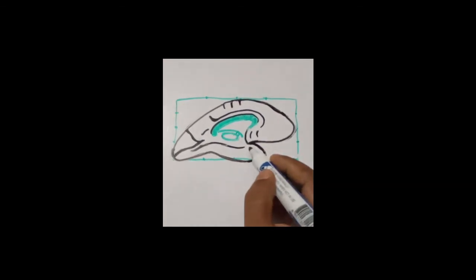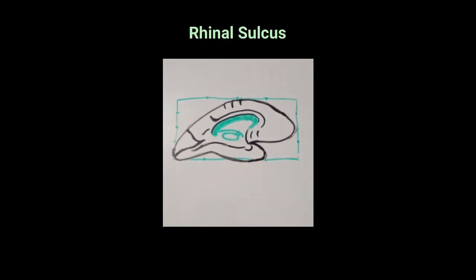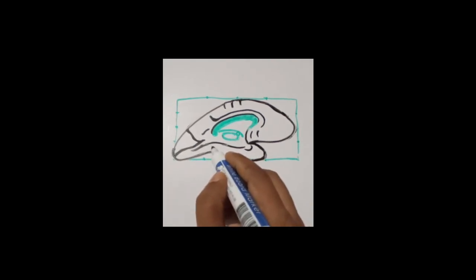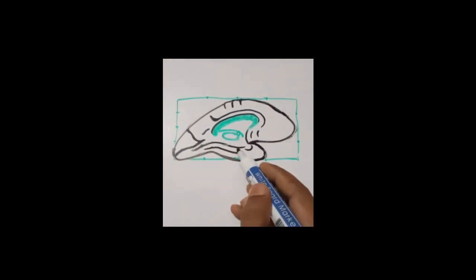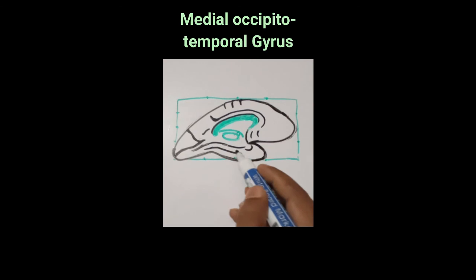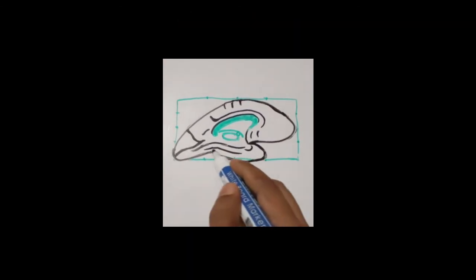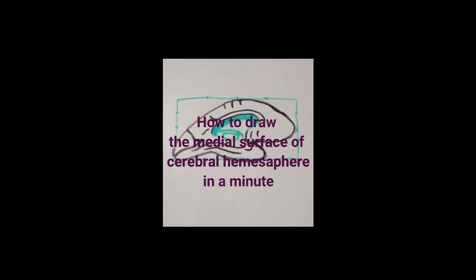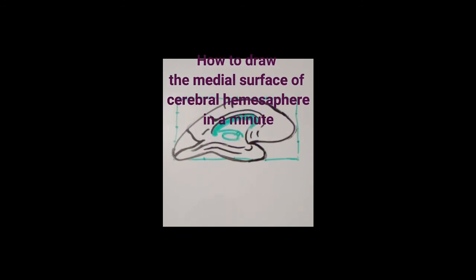The uncus will be separated from the temporal pole by the rhinal sulcus. There is another sulcus termed as the occipital temporal sulcus. Medial to the occipital temporal sulcus, this gyrus is termed as the medial occipital temporal gyrus, and lateral to the occipital temporal sulcus, this area is termed as the lateral occipital temporal gyrus. So this is the medial surface of the cerebral hemisphere — I hope you can draw it anatomically correctly and very nicely in your examination.